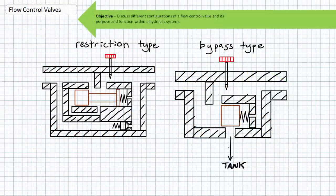Restriction-type pressure-compensated flow control valves are not the only type available. There also exists a bypass-type pressure-compensated flow control valve. The restriction type's main disadvantage is returning excess backed-up flow at high pressure via the main pressure relief valve. The bypass type overcomes this by using a compensator spool and bias spring combination that covers and uncovers a drain passageway to tank, returning excess fluid at a lower pressure so the main pressure relief valve is not activated. These valves require a port to tank in addition to the regular in and out ports.